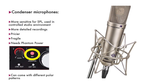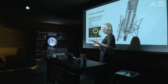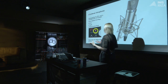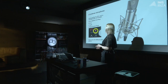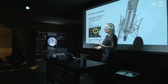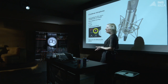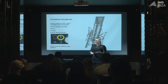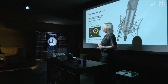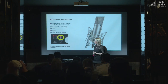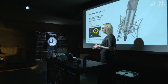Condenser microphones are what we would see in studios, not on stage, because they cannot take high sound pressure levels unless fitted with a pad. They are used in controlled studio environments because they're very sensitive, giving you a very nice and detailed recording. They are pricier — ranging from around £100 up to £12,000. They also need extra power: the 48-volt phantom power button on an audio interface. Dynamic microphones don't need that.